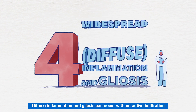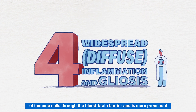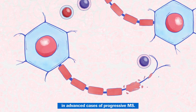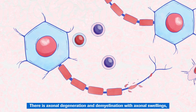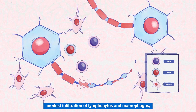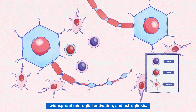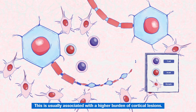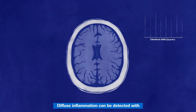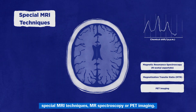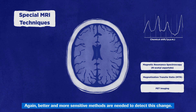Diffuse inflammation and gliosis can occur without active infiltration of immune cells through the blood-brain barrier and is more prominent in advanced cases of progressive MS. There is axonal degeneration and demyelination with axonal swellings, modest infiltration of lymphocytes and macrophages, widespread microglial activation and astrogliosis. This is usually associated with a higher burden of cortical lesions. Diffuse inflammation can be detected with special MRI techniques, MR spectroscopy or PET imaging, though better and more sensitive methods are needed.